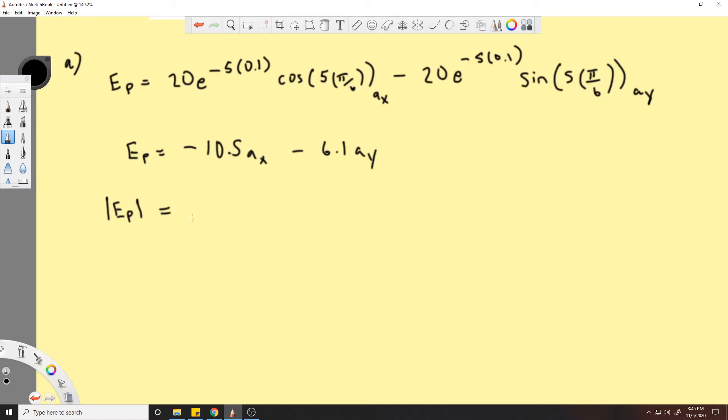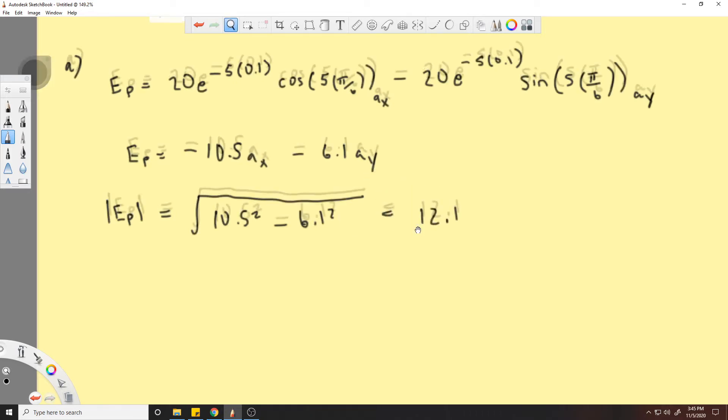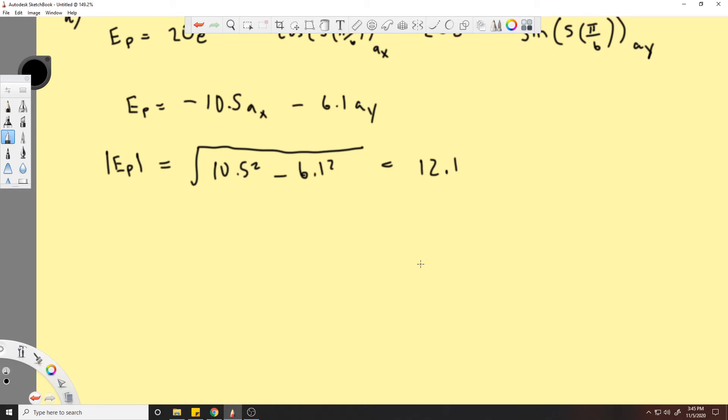And -6.1 in your y direction. Now we want the magnitude of E_P, and to do that we'd simply put in our magnitude equation from right triangle trig, which is 10.5 squared minus 6.1 squared equals 12.1, and that's your first part of this problem.